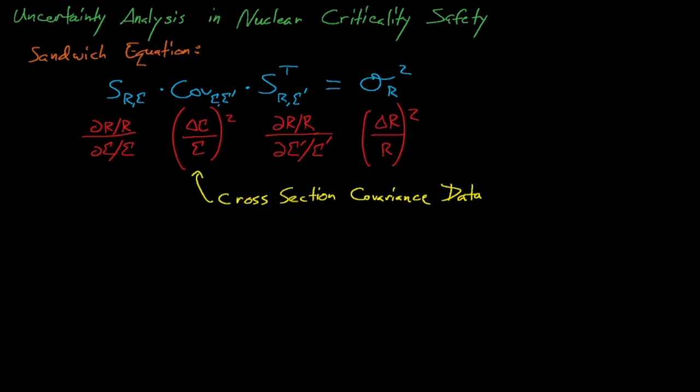The sandwich equation allows us to do some fairly amazing statistical analyses. First, if there is a difference between the Monte Carlo simulation's calculated k-effective and the benchmark experiment's measured k-effective, then knowing the magnitude of the nuclear data induced uncertainty for k-effective tells us if this difference is statistically significant.